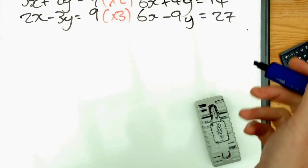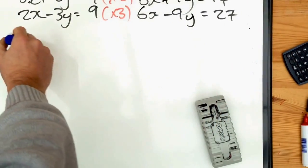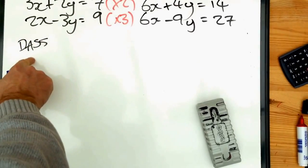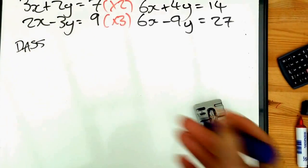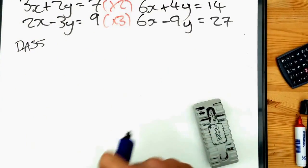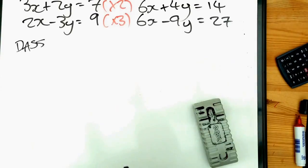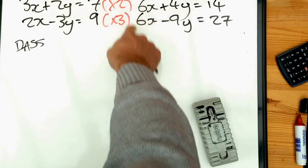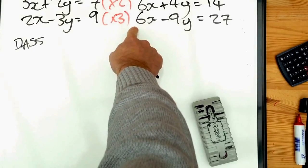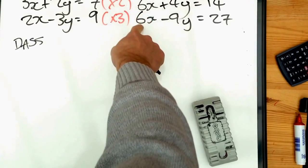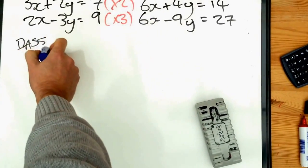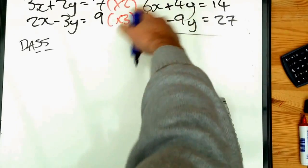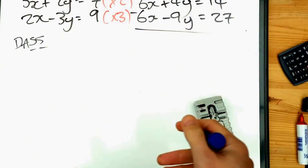My next step is to eliminate them. A lot of you use the DAS method — different signs add, same sign subtract — and that does help you work out whether it's adding or subtracting the equations. But you've got to be careful to look at the right letters. I'm looking at the x's this time because these are the same number. Those signs are the same, so I subtract. Six x take away six x — the x's disappear.